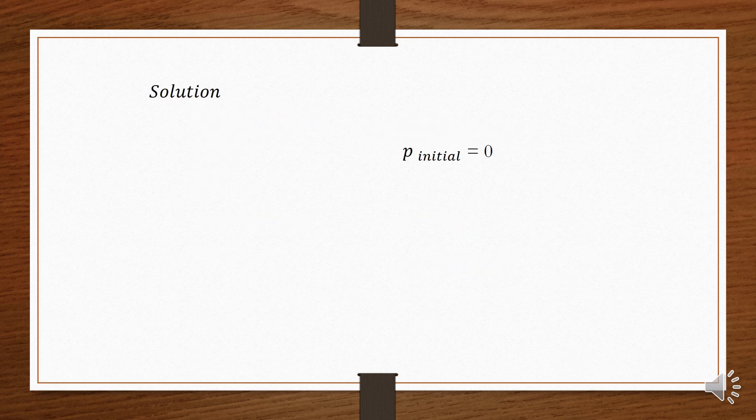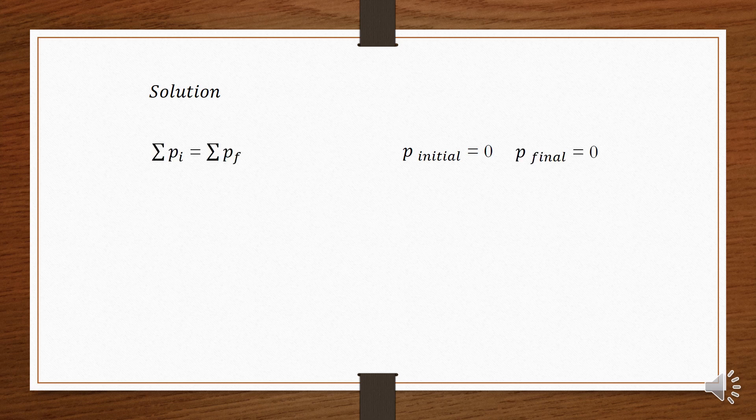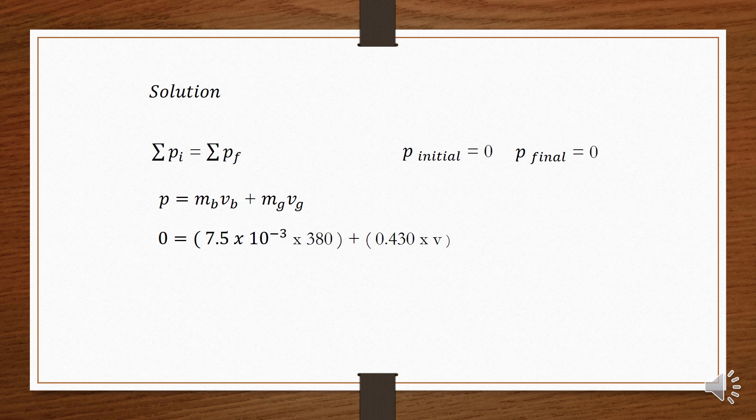As we know, the formula for conservation of linear momentum is: summation of P initial is equal to summation of P final. Since both pistol and bullet are stationary before being fired, that means P initial for bullet is equal to zero. Insert the values as below.